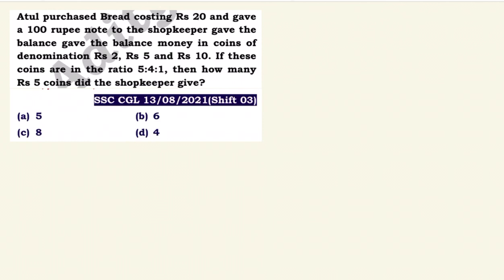So 100 minus 20 gives us 80 rupees as change. The shopkeeper returns the balance using rupees 2 coins, rupees 5 coins, and rupees 10 coins in the ratio 5 is to 4 is to 1.